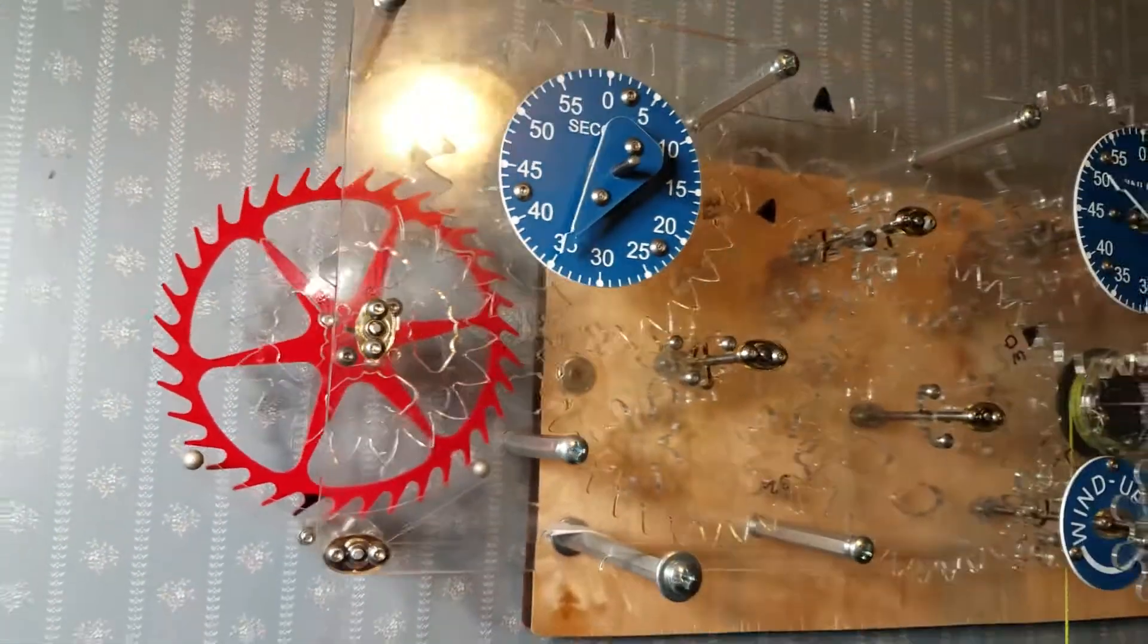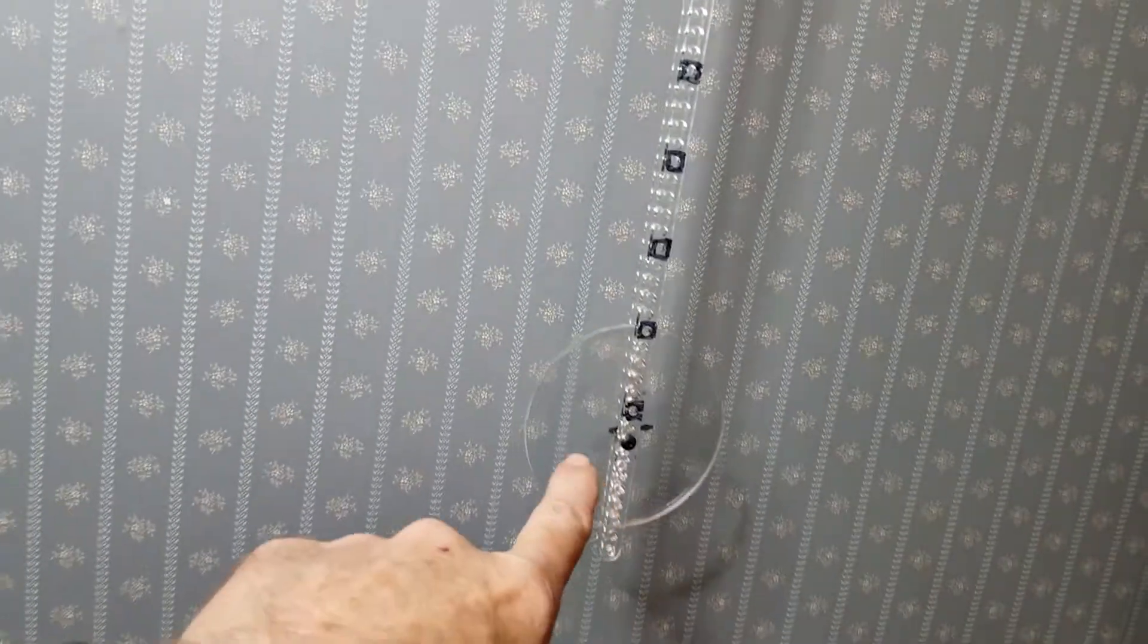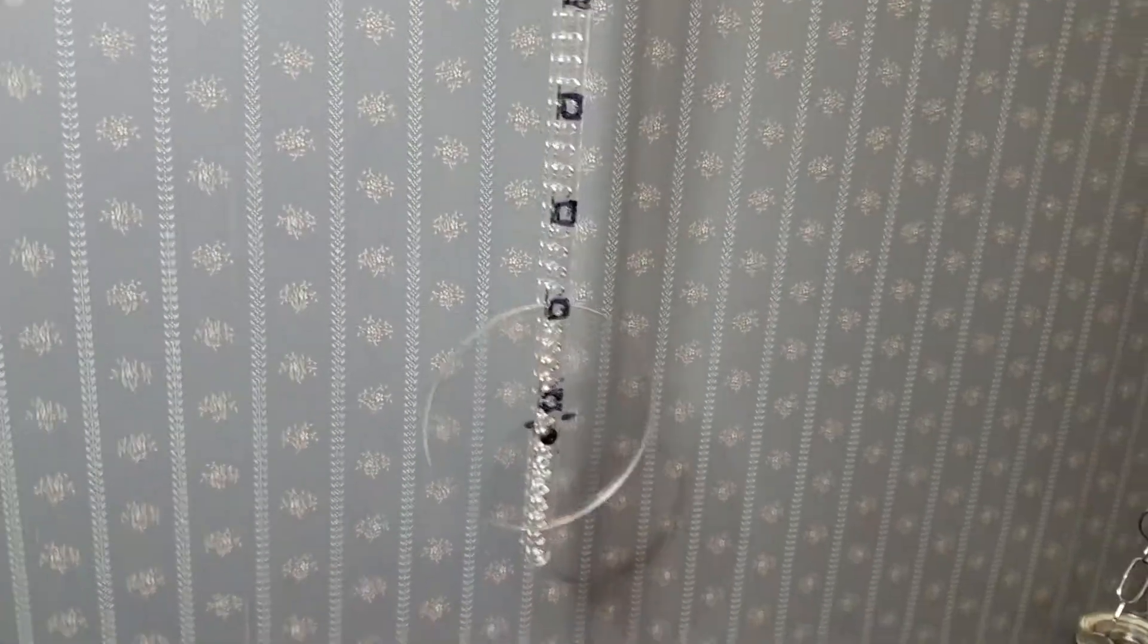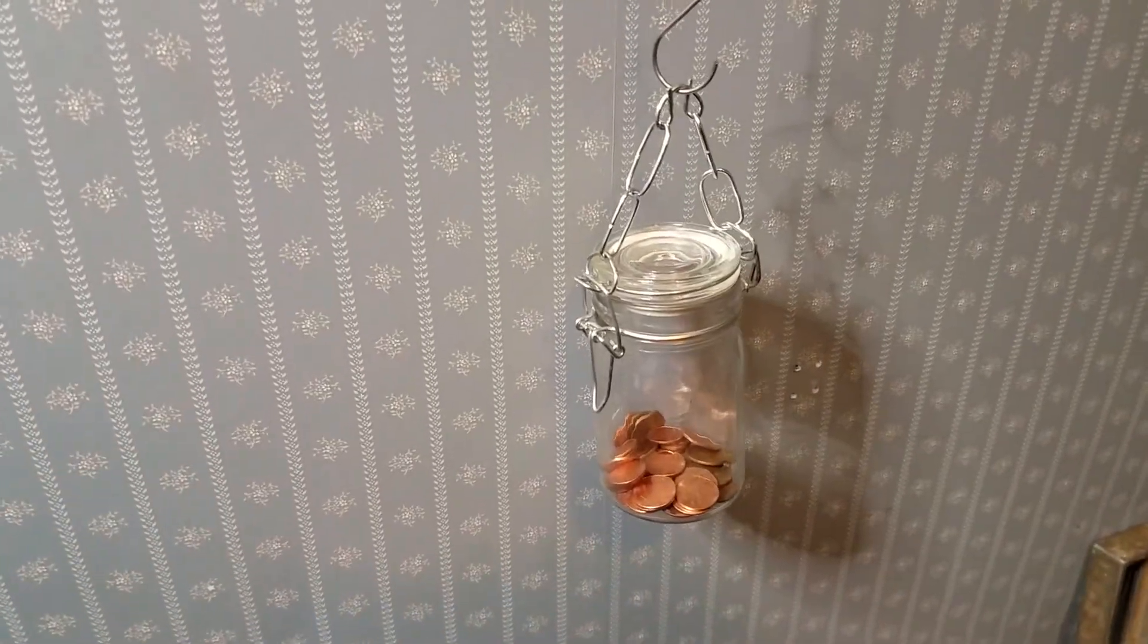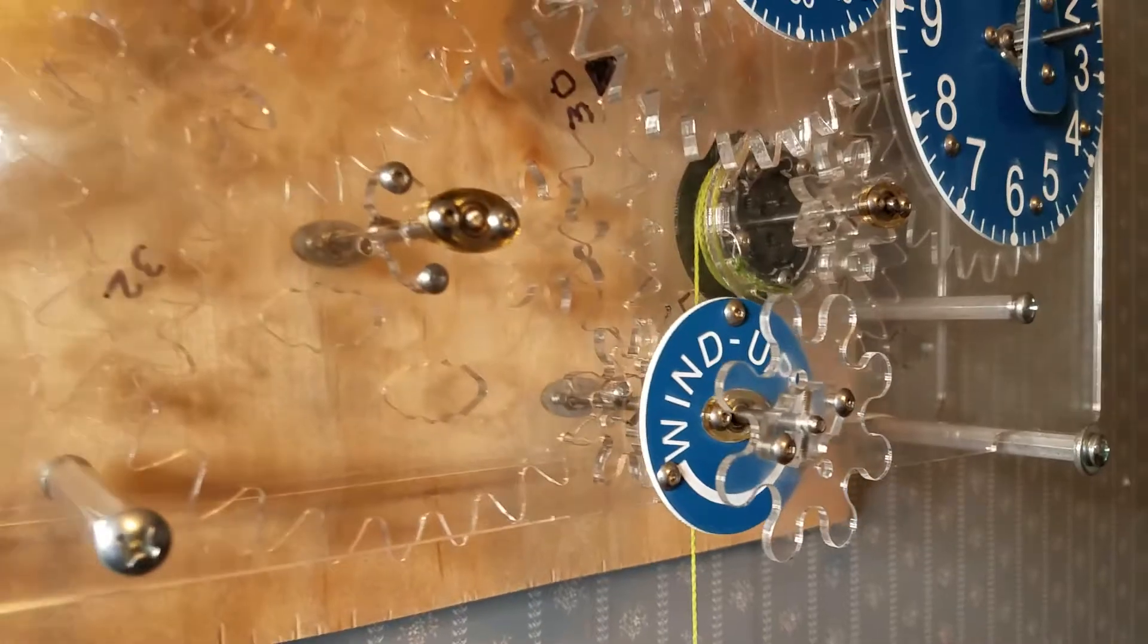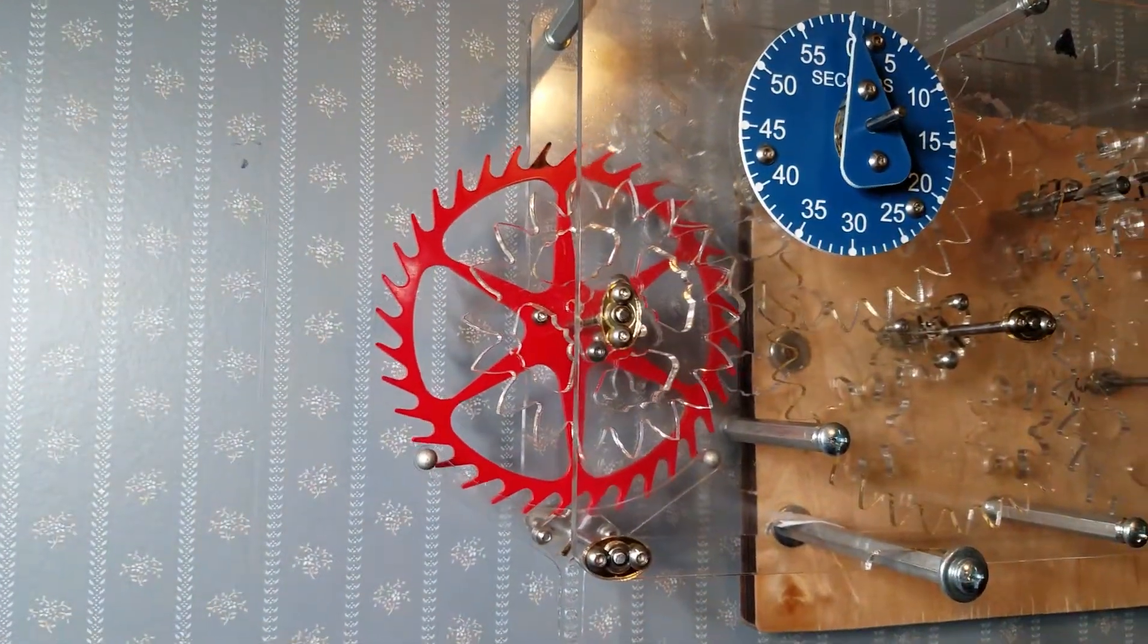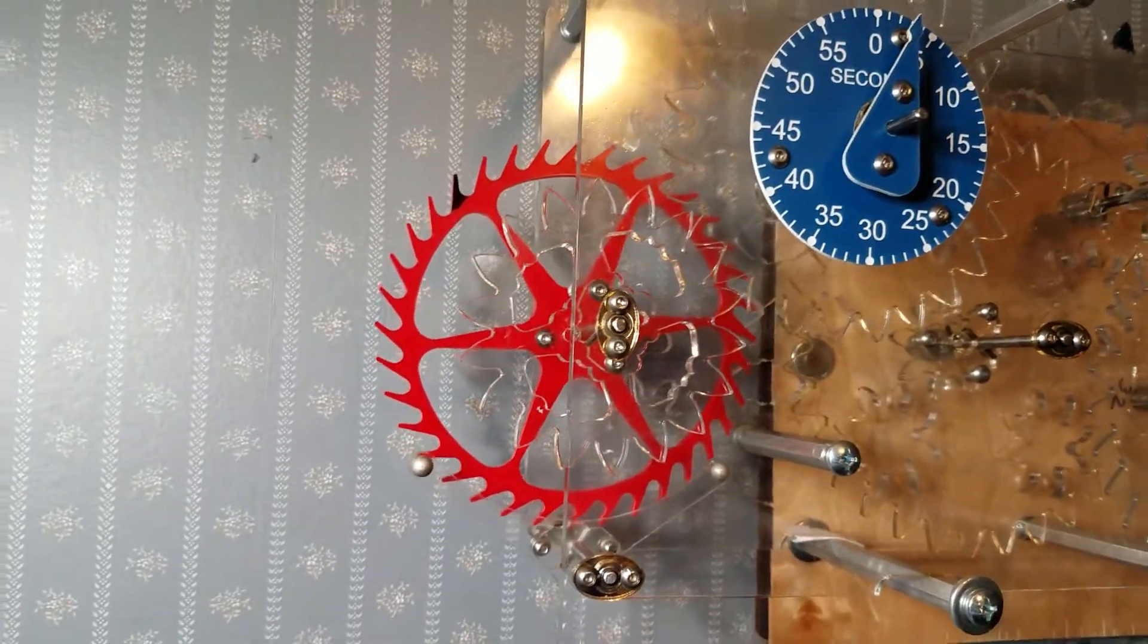So right now I've got it by adjusting the distance of my pendulum and also adding or taking away weight on my wind-up drum. I can adjust the timing. Right now it's about two seconds fast every half hour.